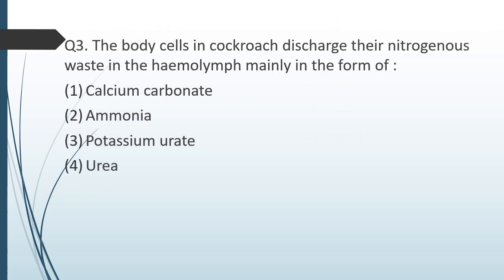Question number three: the cells in cockroaches discharge their nitrogenous waste into hemolymph mainly in the form of — calcium carbonate, ammonia, potassium urate, or urea? The correct answer is option three, potassium urate.